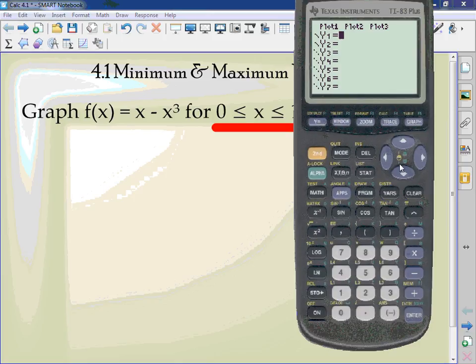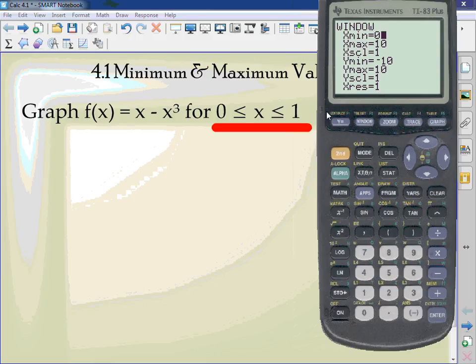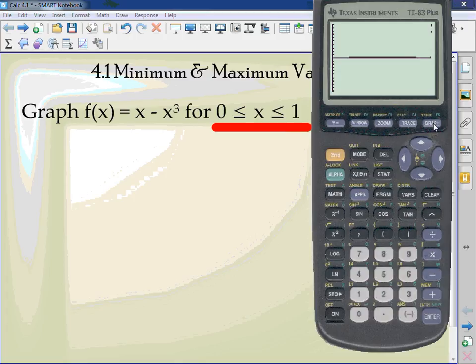So in your calculator, type in x minus x cubed. But I need to change my window. I'm going to change it back to normal. I need my x minimum to be 0. I need my x maximum to be... You need to change your min and your max. I graph. It didn't show me much, right?